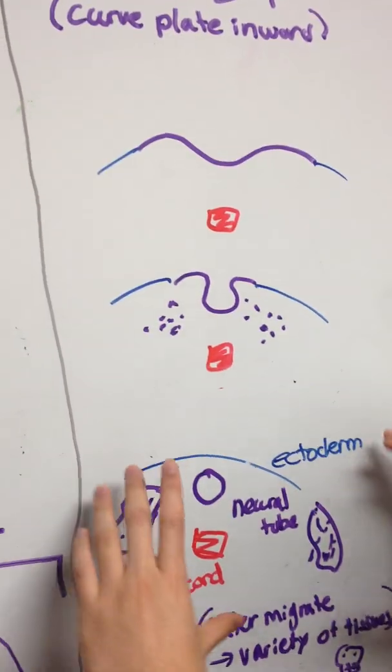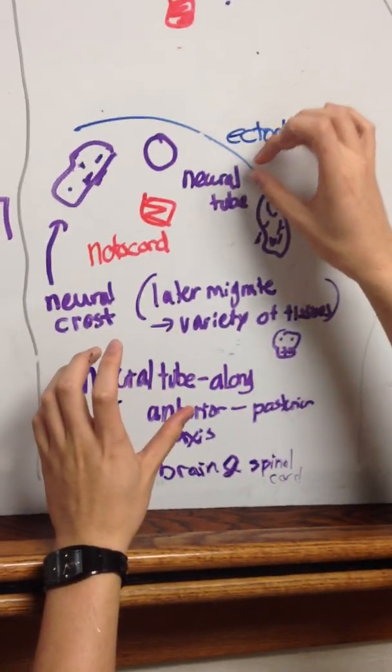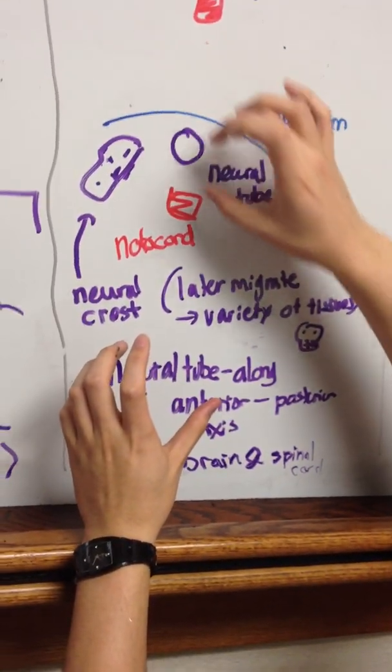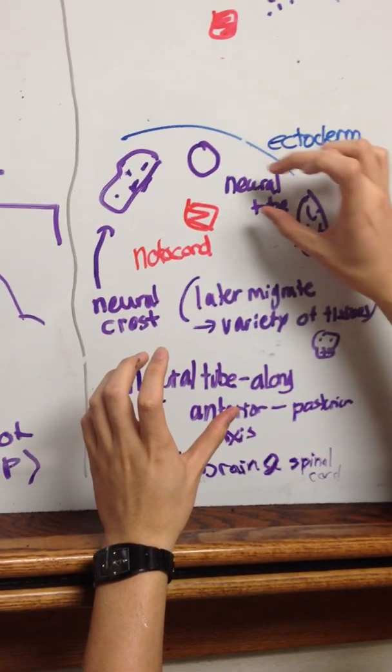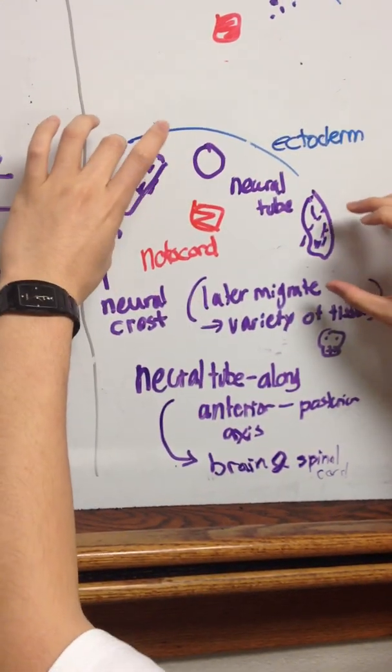In this final picture, we can see the ectoderm having reformed, the neural tube beneath it, and the notochord beneath the neural tube. To the side of the neural tube, we can see the neural crests.